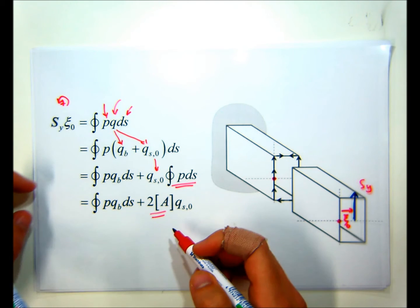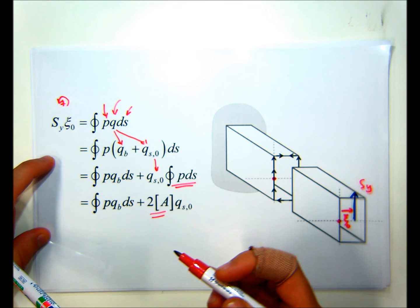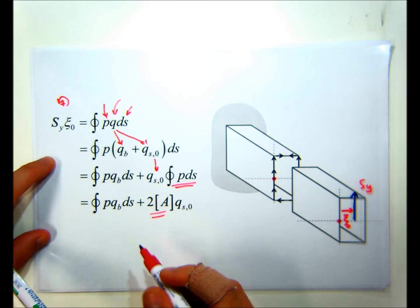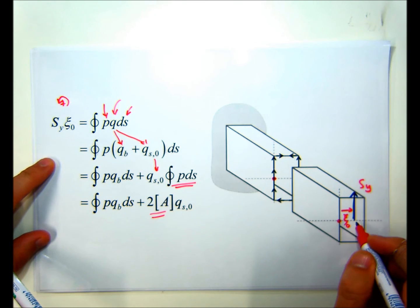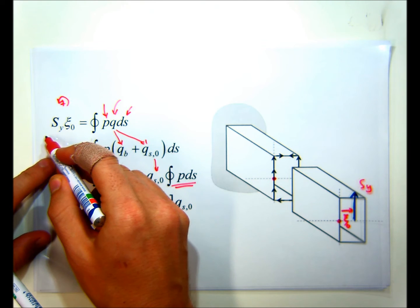So at the end, once we've equilibrated moments, if we equate moments in such a way that we take the moments about the point in line with the shear force, if we take that as our reference point, then this can go to zero.